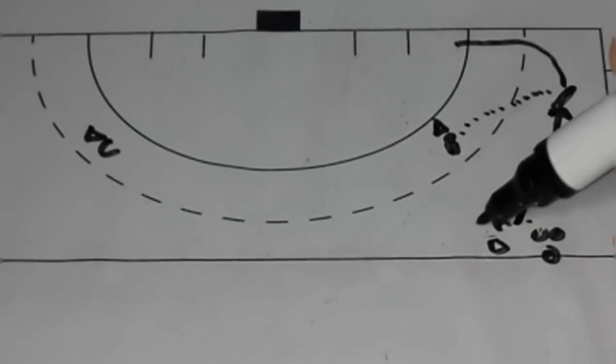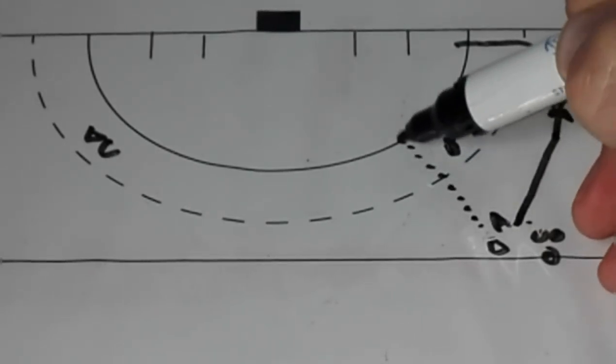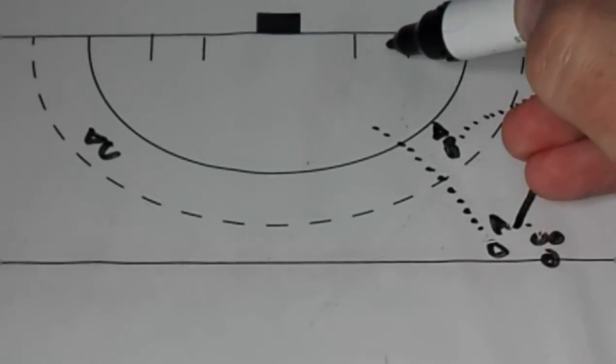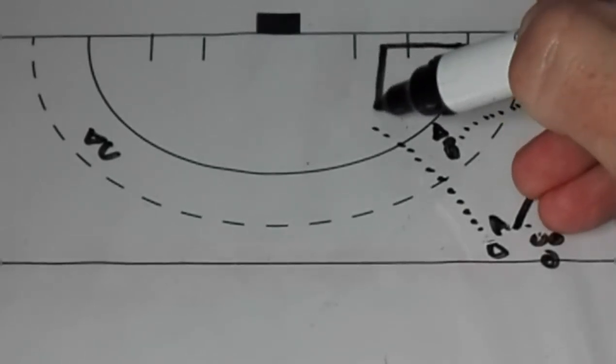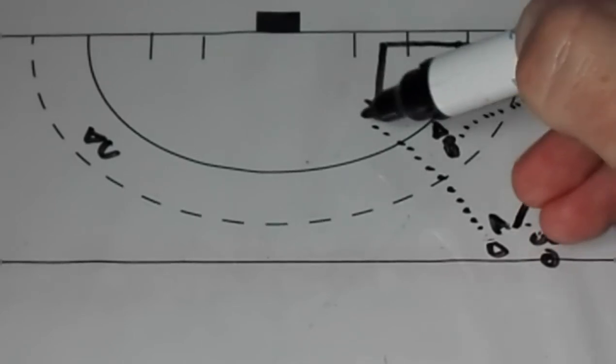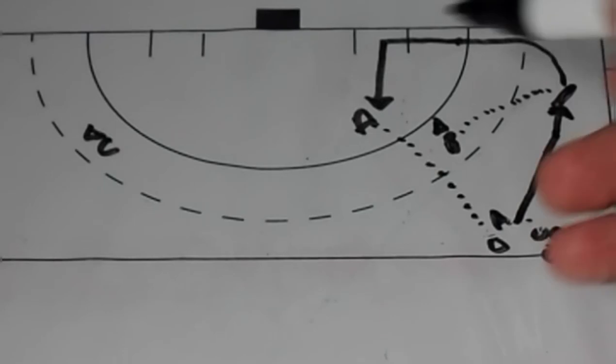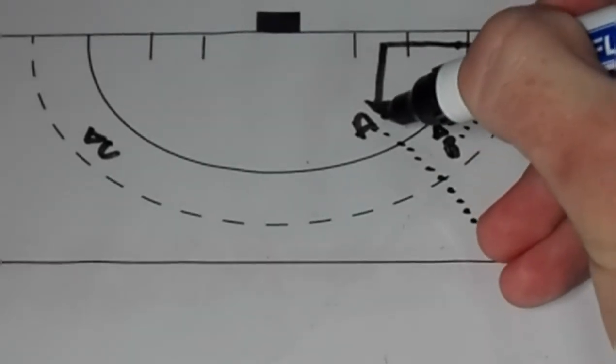While this is happening player A will then follow up their ball. Player B will keep driving the baseline and make a 90 degree pass to player A.